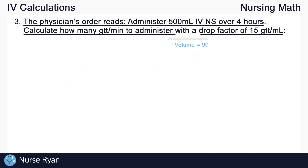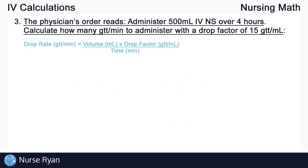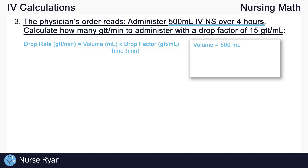Moving on to question number three. The physician's order reads: administer 500 milliliters IV normal saline over four hours. Calculate how many drops per minute to administer with a drop factor of 15 drops per mil. Looking at our formulas, we'll use the drop rate formula — drop rate in drops per minute equals the volume in milliliters times the drop factor in drops per milliliter, all divided by the time in minutes. We have 500 mils as the volume and a drop factor of 15 drops per milliliter. However, our time is four hours and the formula requires time in minutes.